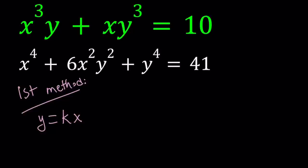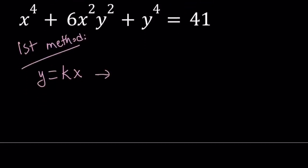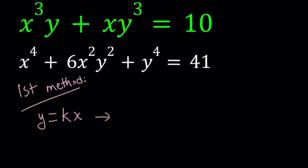By replacing y with kx, we get the following. First of all, from the top equation, we get kx multiplied by x³. So that's going to give us kx⁴ plus k³x³, which gives us k³x⁴. And that equals 10.